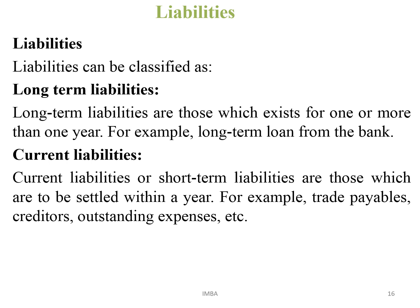Liabilities are those which the business has to pay to other people. They are categorized into two types: long-term liabilities — those the business has to pay for more than one year, like long-term loans — and current liabilities — those the business has to pay within a year, like trade payables, creditors, and outstanding expenses.